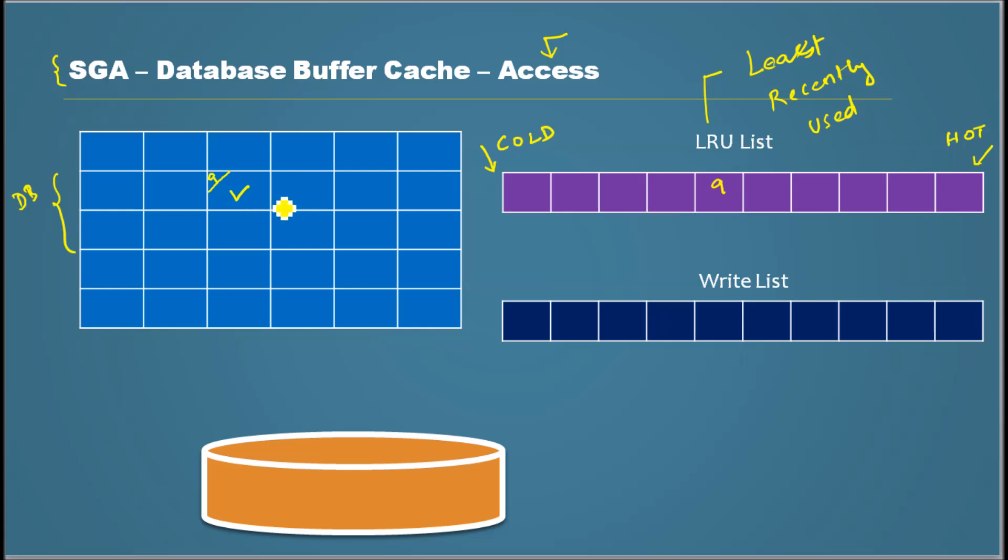Now another process comes, or maybe the same process accesses some other data file or object, and that gets stored here. Let me call this 10, 11, 12, 17. So somewhere in the middle, 17 - it notes that block 17 was used. So like that, I'm gonna call some random numbers: 21, 45. It just puts them somewhere in the middle.